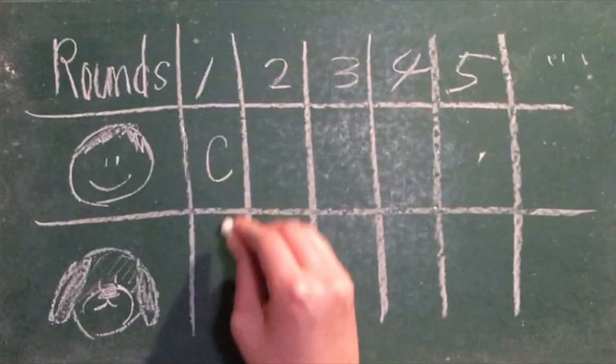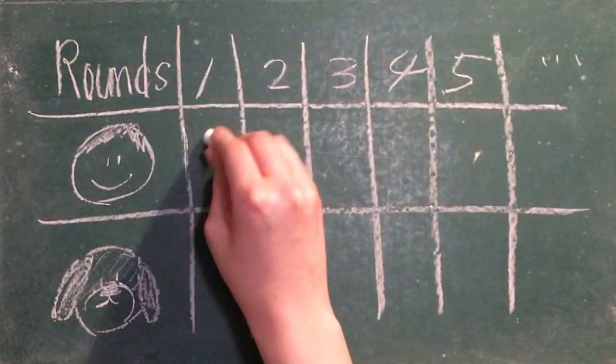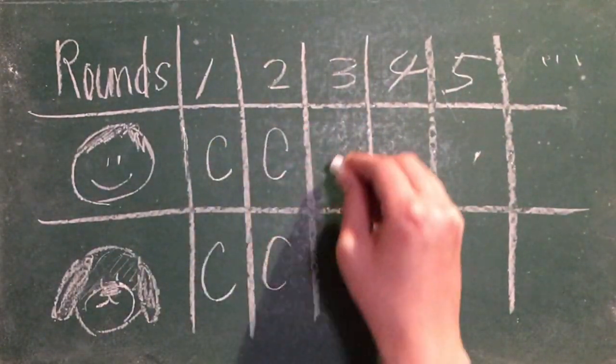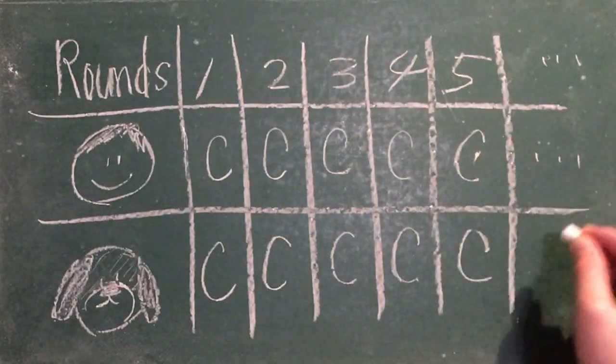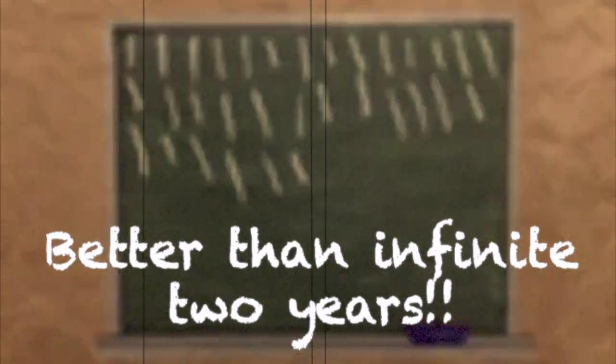Just as a fun example, if you and your buddy both use tit for tat and cooperate in the first round, then you will cooperate infinitely, and you get infinite one-year sentences.